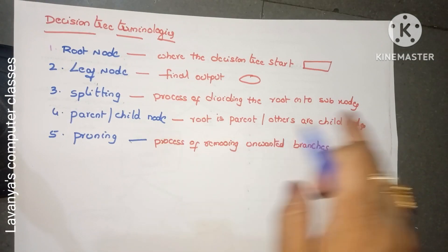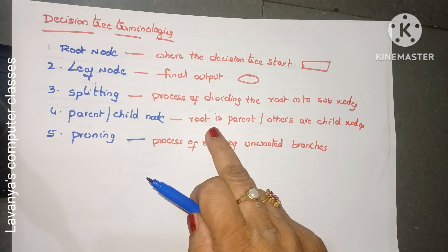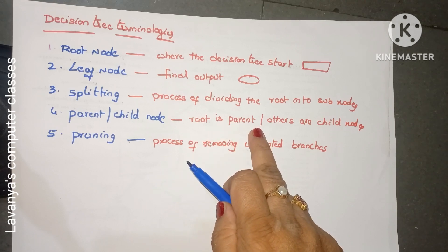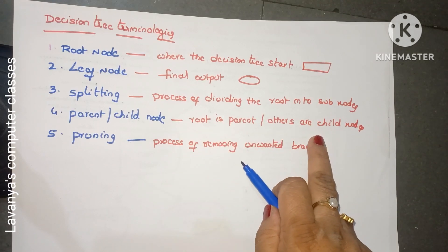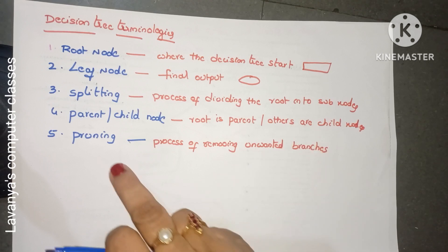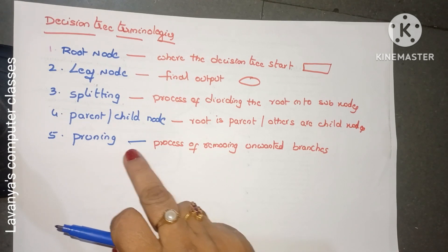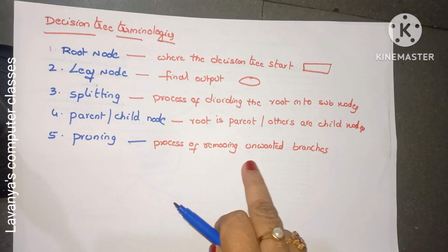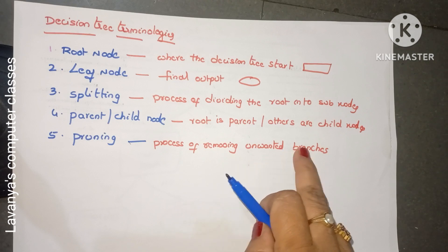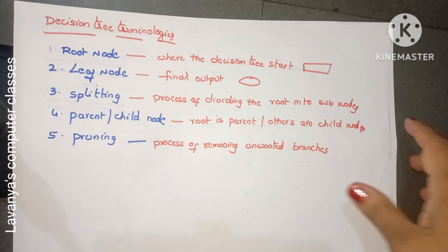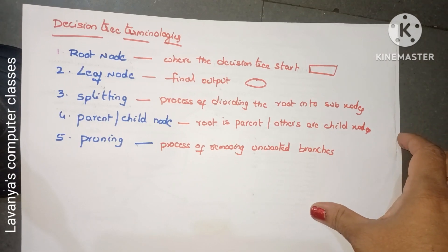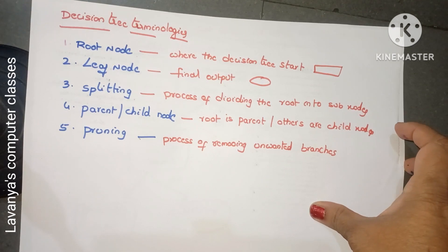Parent and child nodes: the root is called the parent node, and all remaining nodes other than the root are called children nodes. Pruning is the process of removing unwanted branches — when you want to reduce the number of branches, that is called pruning. These are some key terminologies in decision trees.